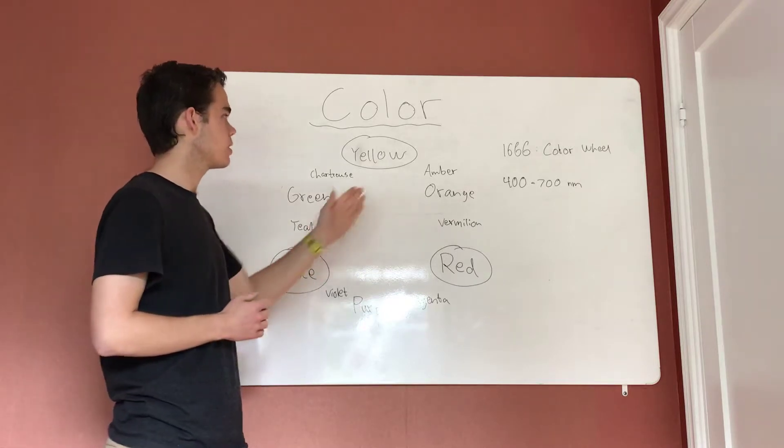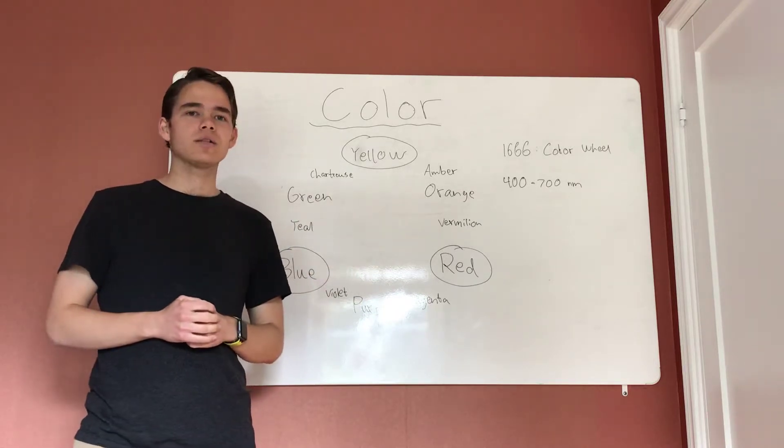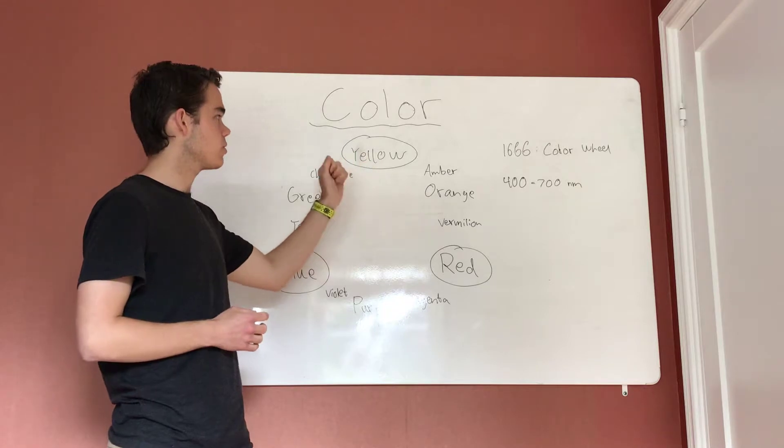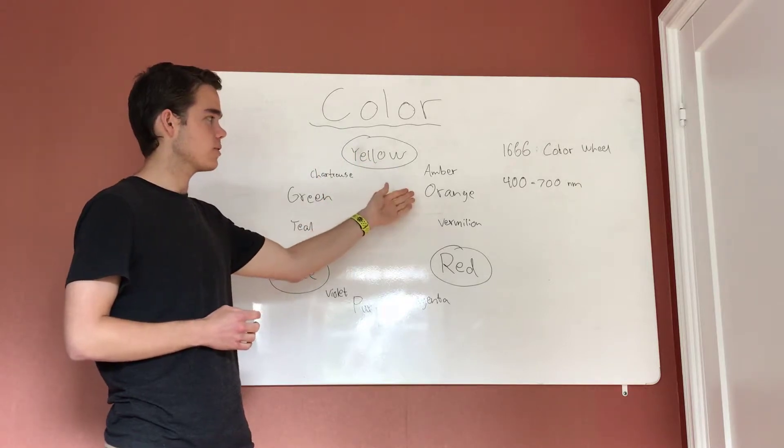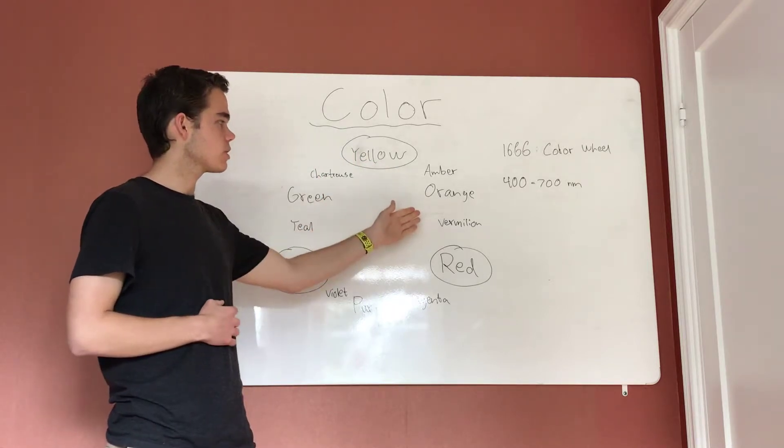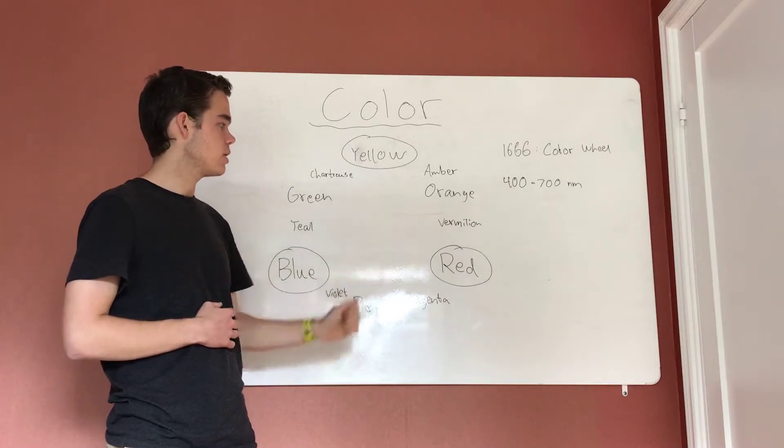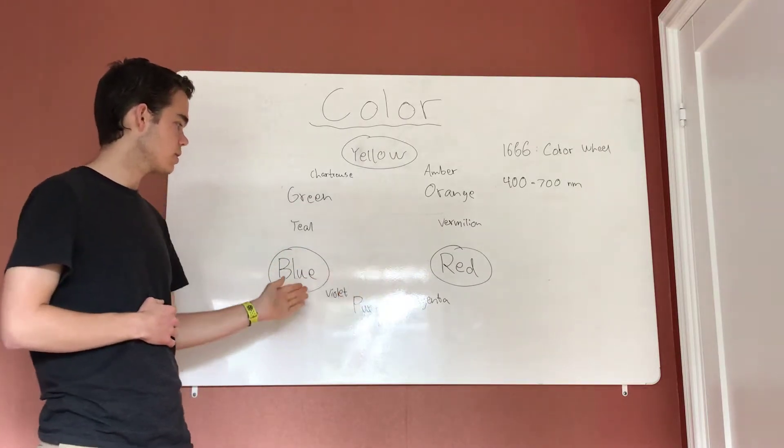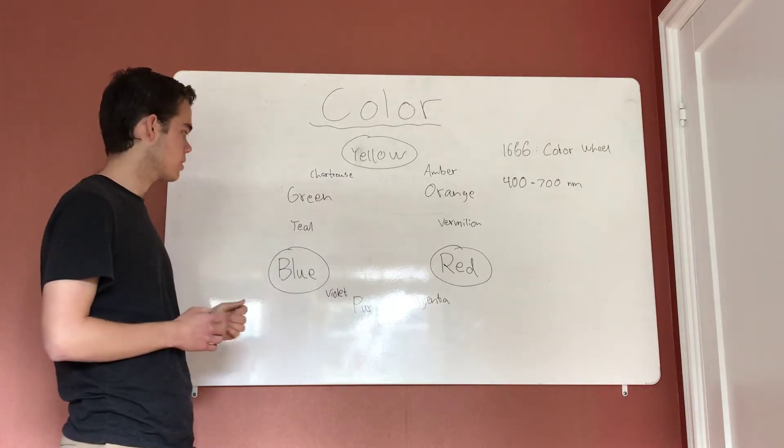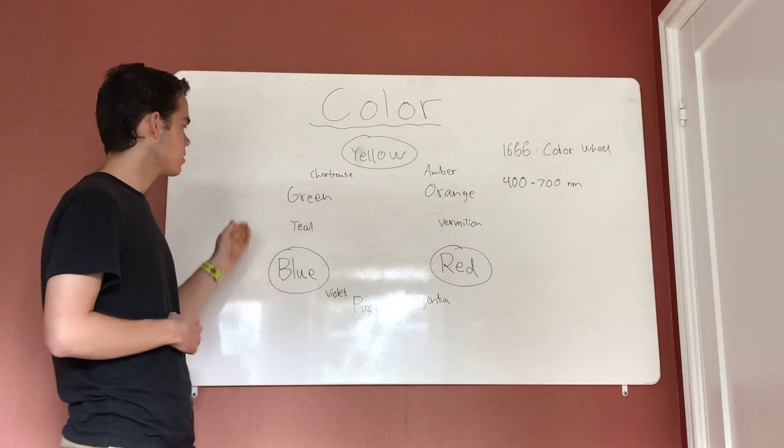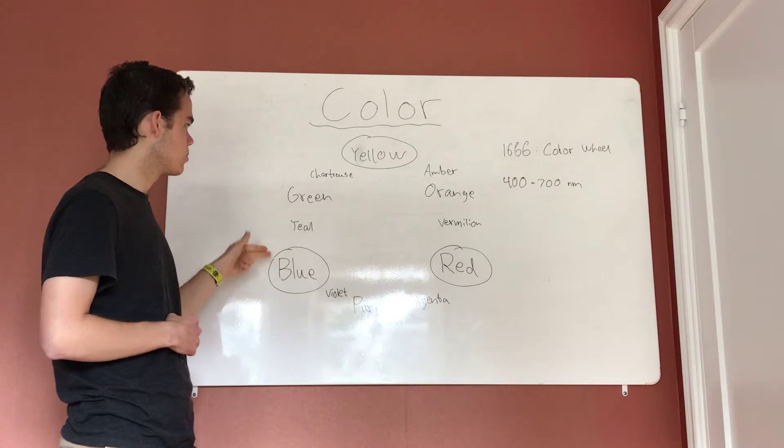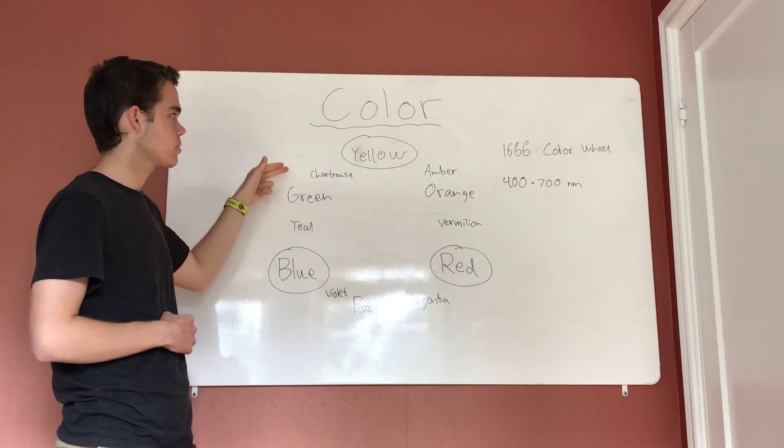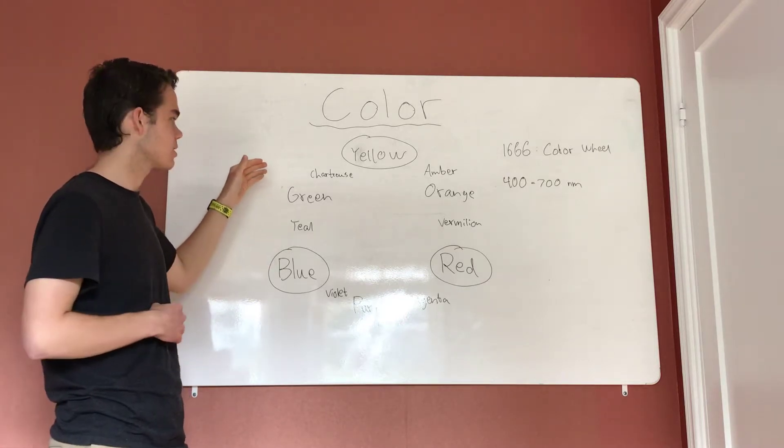Then vermilion is created by mixing orange and red. Magenta is created by mixing purple and red. Violet is created by mixing blue and purple. Teal is created by mixing blue and green, and chartreuse is created by mixing green and yellow.